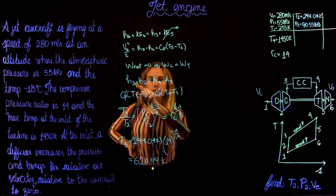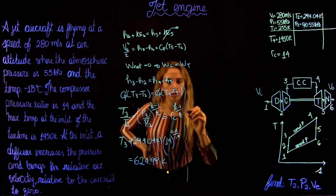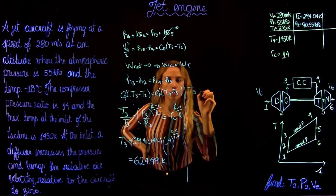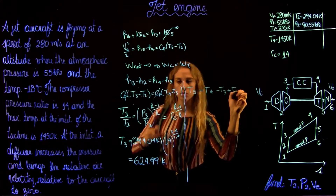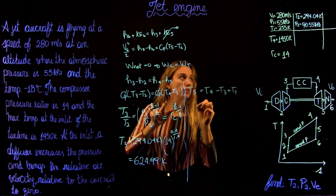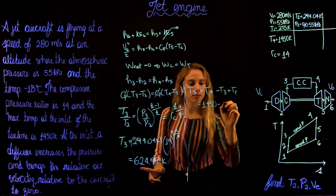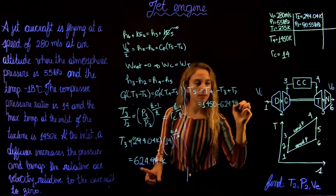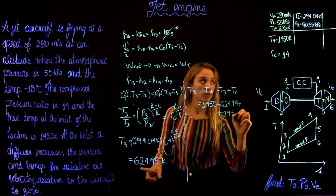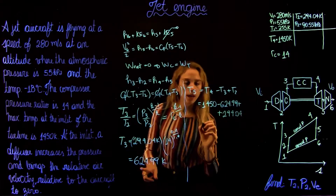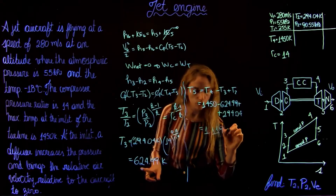Going back to the work balance equation and solving for T5: T5 = T4 − T3 + T2 = 1450 − 624.99 + 294.04 = 1119.05 K.